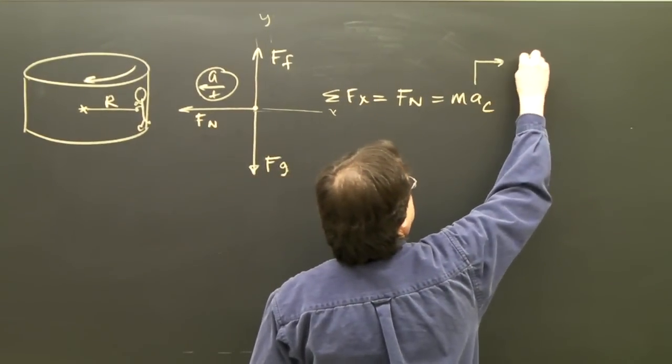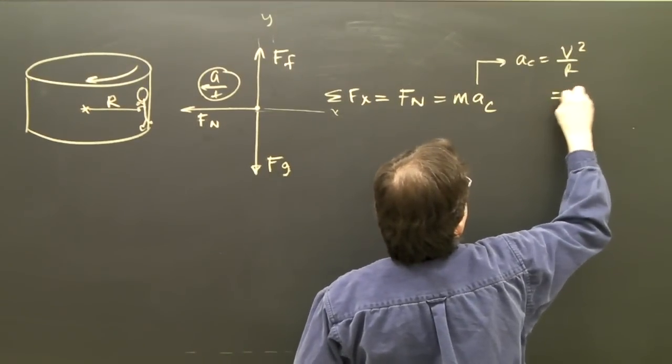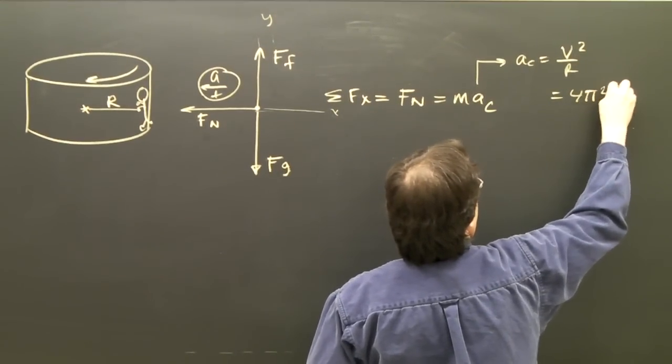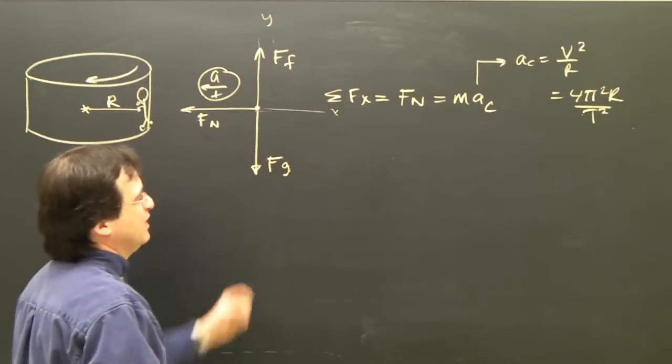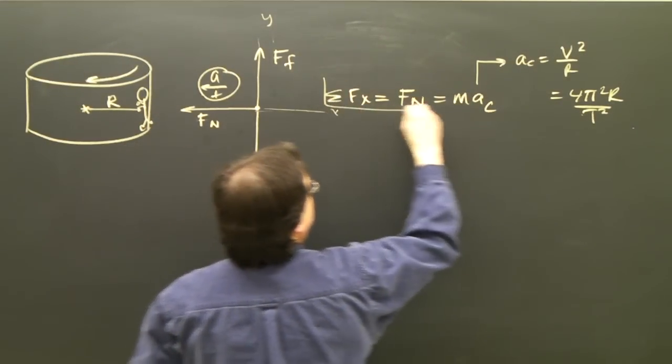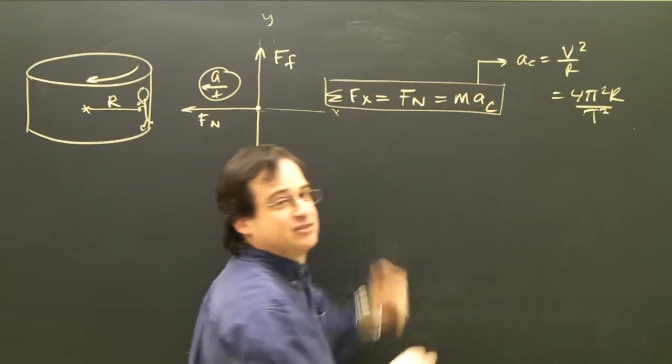So again, I've got some choices. ac is v squared over r, or 4 pi squared r over t squared, or 4 pi squared rf squared. So this is the formula in the x-direction. I would put one of those in there and solve for something.